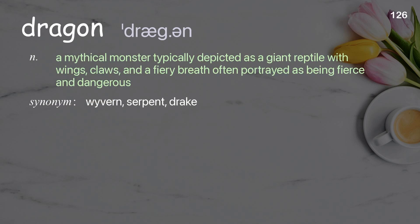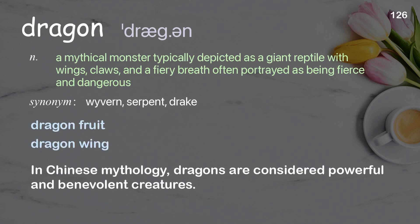Dragon: a mythical monster, typically depicted as a giant reptile with wings, claws, and a fiery breath, often portrayed as being fierce and dangerous. Examples: dragon fruit, dragon wing. In Chinese mythology, dragons are considered powerful and benevolent creatures.